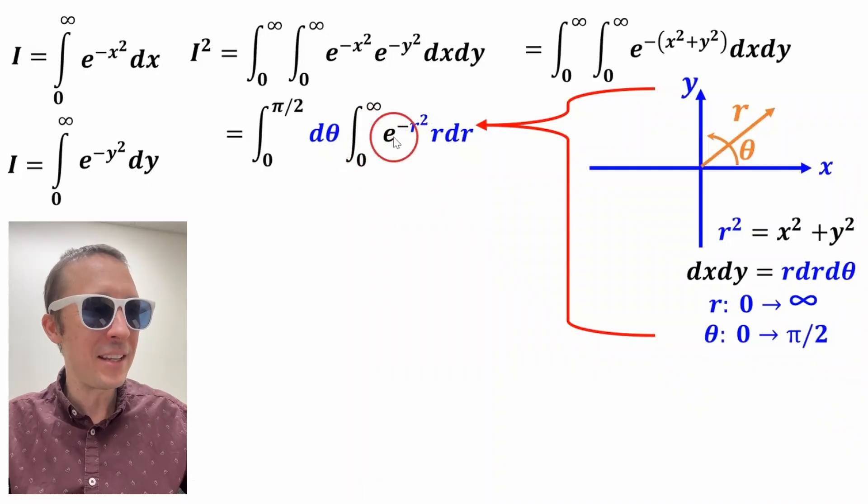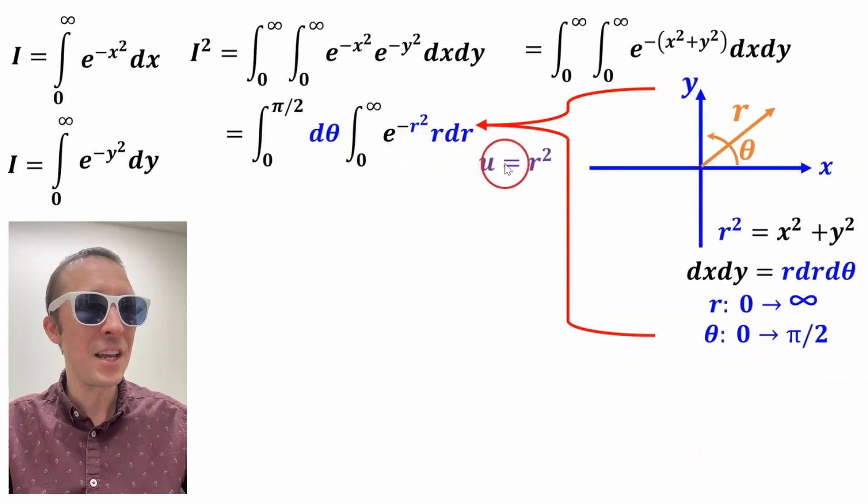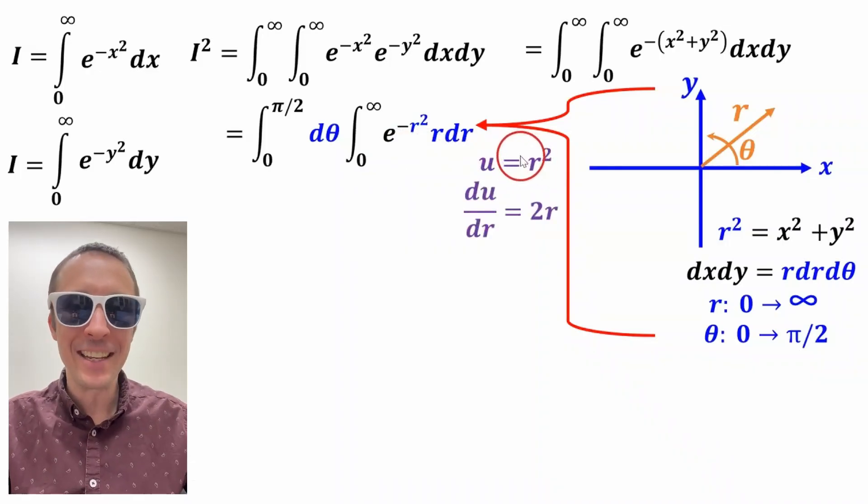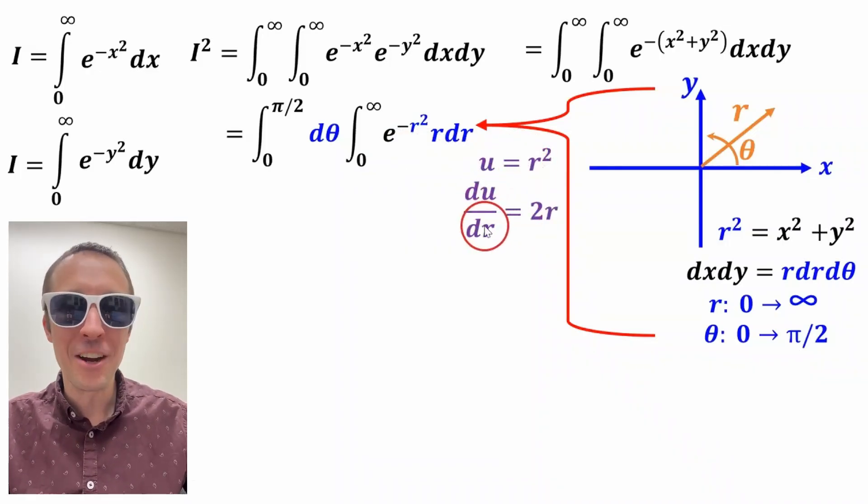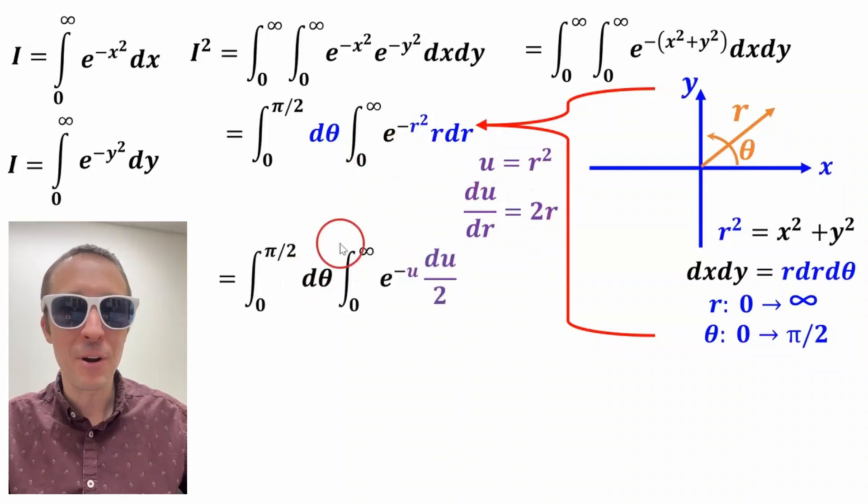And to evaluate these two integrals, we'll do the right one first. We'll do a u substitution. Set u equal to r squared. Take the derivative to get du dr equals 2r.